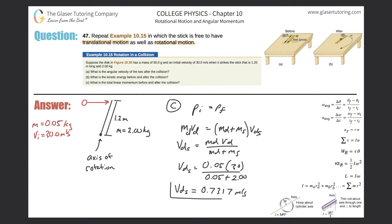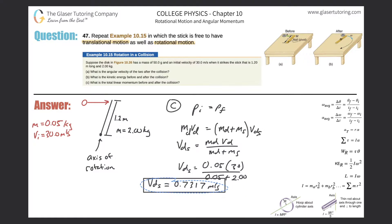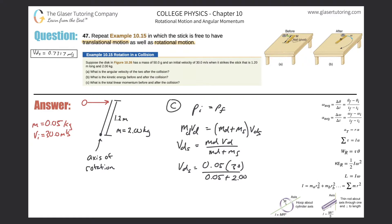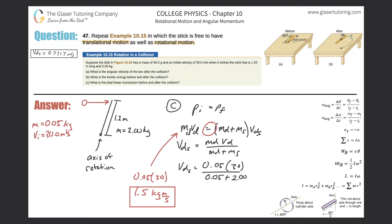This value will be important shortly. To find the momentum before — which equals the momentum after — it's simply the mass of the disc times the velocity of the disc: 0.05 times 30, which works out to 1.5 kilogram-meters per second. Since momentum is conserved, this is both before and after. This is really the answer to letter C, though we also found the translational velocity afterward.